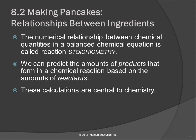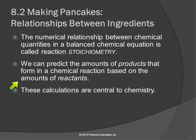Making Pancakes. We're talking about relationships between ingredients — between reactants and products in this chapter. It can be helpful to think about these things in terms of something we understand first, and cooking is a good illustration. This ties into what we learned in Chapter 7 about chemical reactions. The numerical relationship between chemical quantities in the balanced chemical equation is called reaction stoichiometry. We can predict the amounts of products that form in a chemical reaction based on the amounts of the reactants.